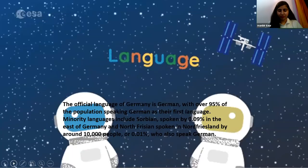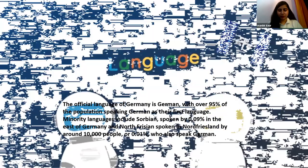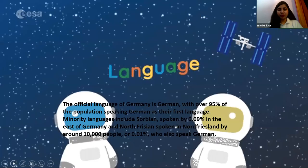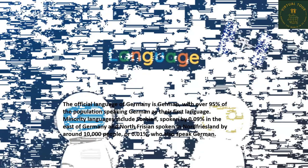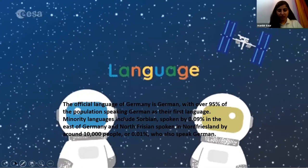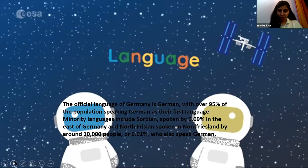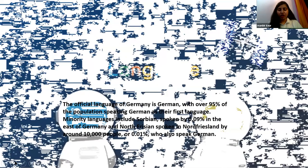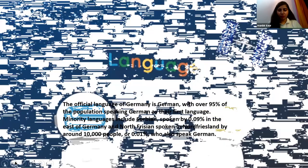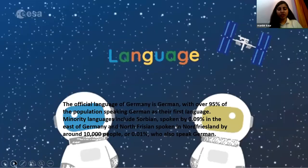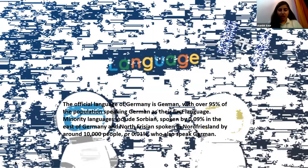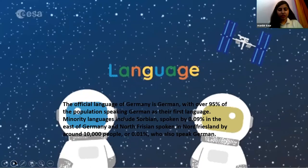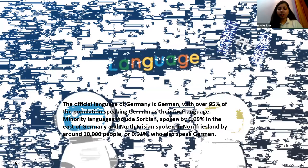So now proceeding with the language — the official language of Germany is German, with over 95% of the population speaking German as the first language. Talking about other minority languages, that includes Sorbian, spoken by only 0.09% in the east of Germany, and North Frisian, spoken in North Friesland by around 10,000 people — that is 0.01%.